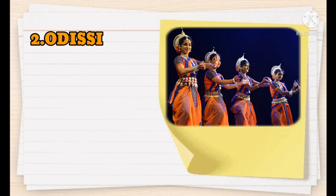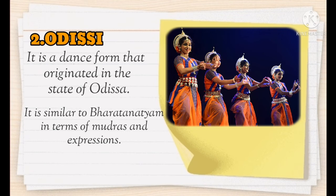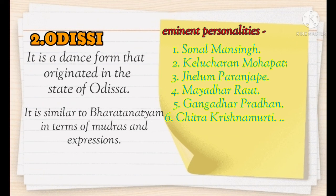Next is Odissi — a dance form that originated in the state of Orissa. It is similar to Bharatanatyam in terms of mudras and expressions. Eminent personalities in the field of Odissi are: Sonal Man Singh, Kelucharan Mohapatra, Jhelum Paranjape, Mayadhar Raut, Gangadhar Pradhan, Chitra Krishnamurti, and many more.